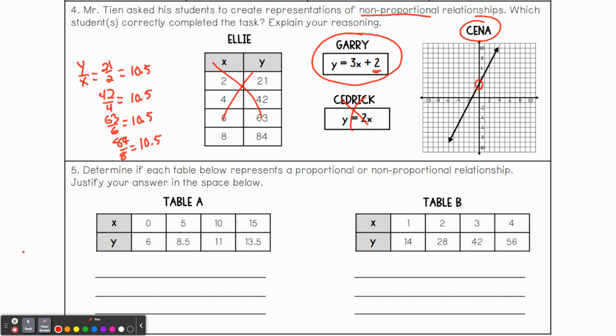All right. Lastly, number five, determine if each table below represents a proportional or non-proportional relationship. Again, we're looking here since they give us a value at zero when X equals zero, because there's a value here that is not zero. This is non-proportional.